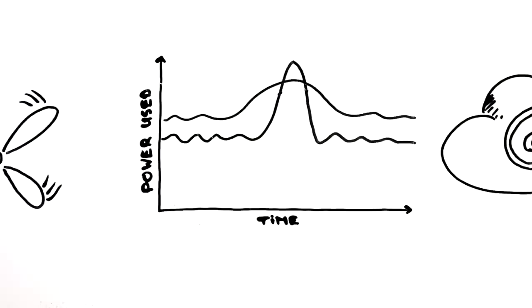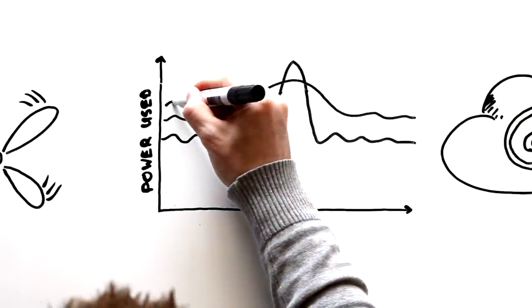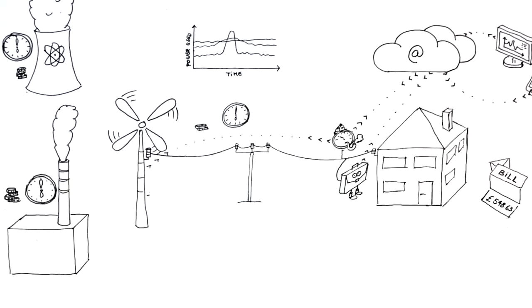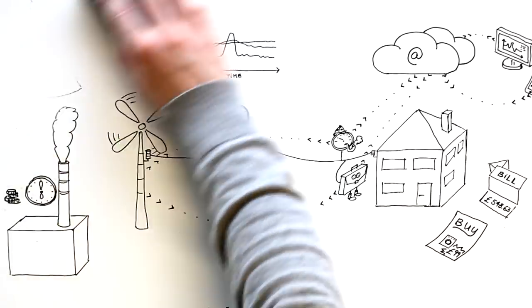The power companies are also happy because the agents help spread people's electricity requirements across the day, so they no longer have peak times that are very inefficient to provide for. This makes electricity production cheaper for you by making it cheaper to produce and cleaner for the environment.